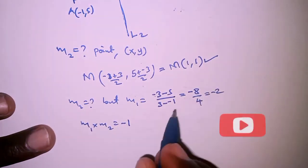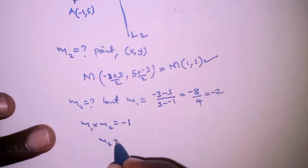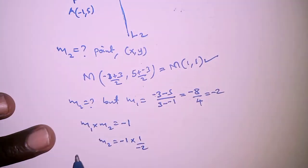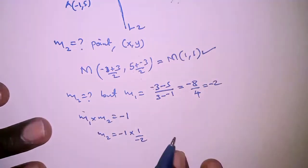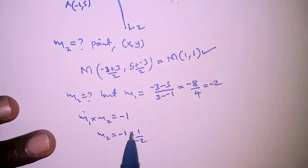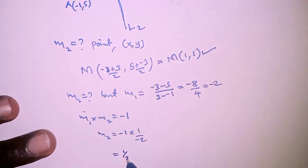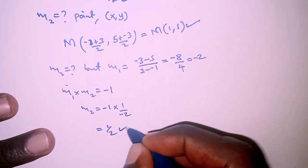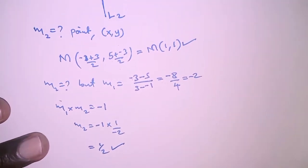But we know the gradient of line 1 which is -2, so m2 will simply be -1 × (1/-2). In other words we've replaced m1 with -2, so when you multiply both sides by 1/(-2) we get 1/2 as the gradient of line 2.